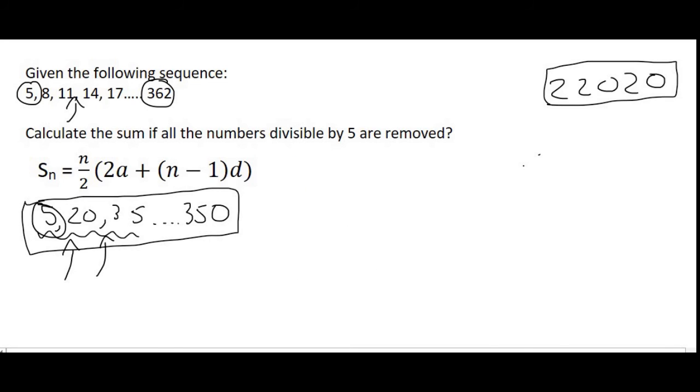So, we now know that there are 24 terms in the divisible by 5 pattern. And, so we can calculate the sum of those 24 terms by using the sum formula. So, it's 24 terms over 2, 2 times a, which is 5, plus the number of terms is 24 minus 1. And, the common difference in that pattern is now 15.